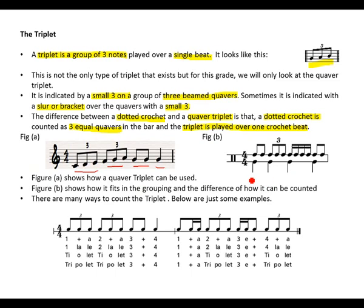Also in figure B, it shows exactly how quavers are placed. Two quavers for the first beat. The triplet for the second beat. Four semi-quavers for the third beat. And two quavers, lastly, for the fourth beat.